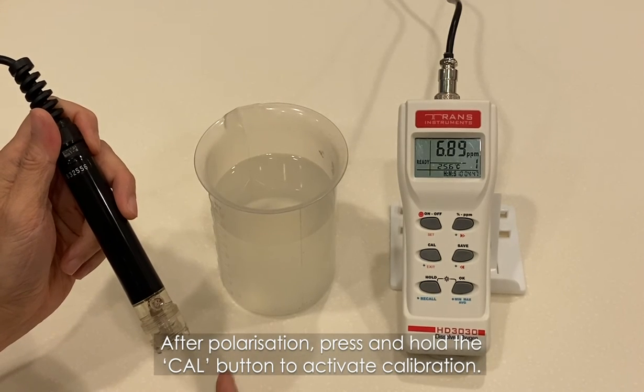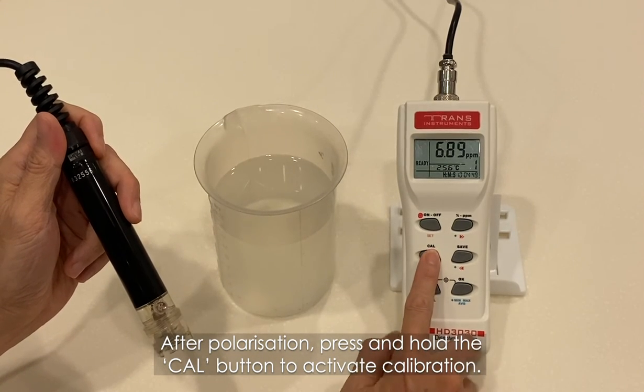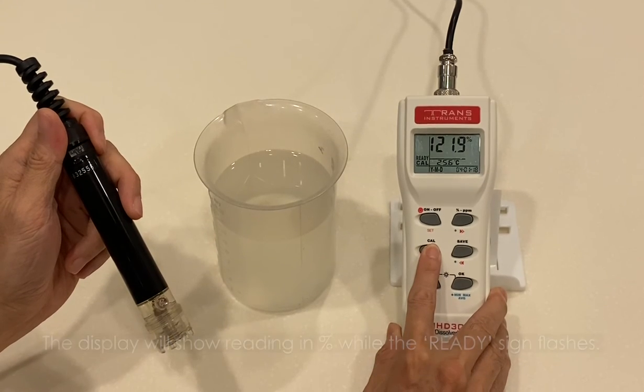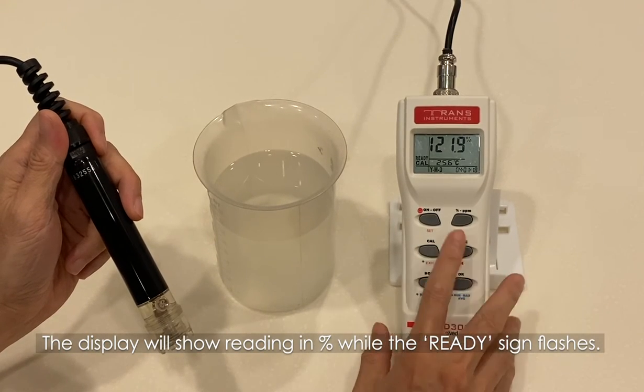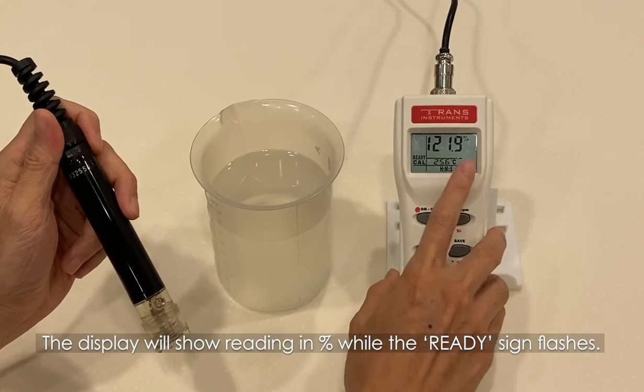After polarization, press the CAL button to activate calibration. The display will show reading in percentage while the ready sign flashes.